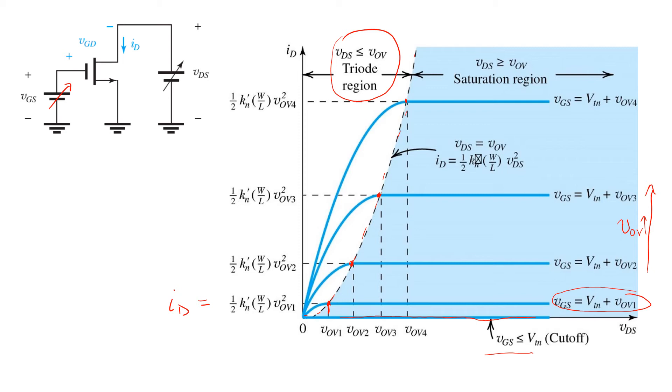This is a useful picture to keep in mind. But always remember with this plot that you're looking at the drain current on the Y axis versus VDS on the X axis. And for each particular trace on this plot, VGS is being held constant, the gate-source voltage.